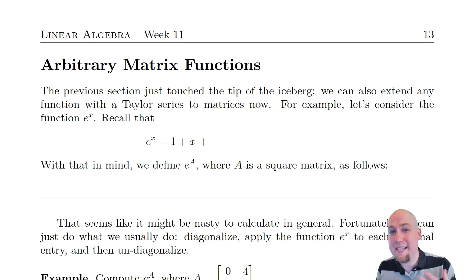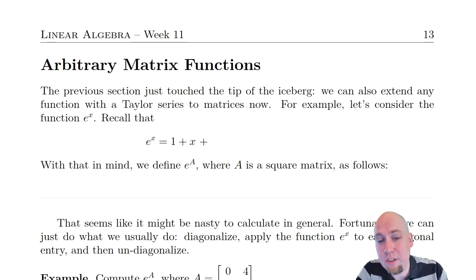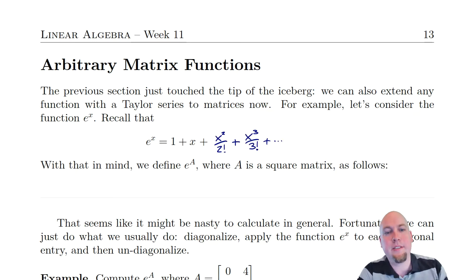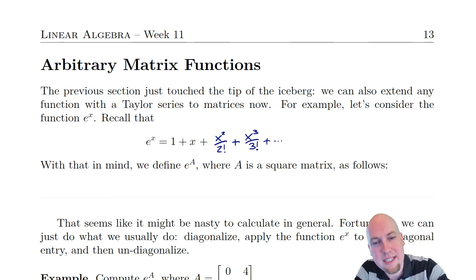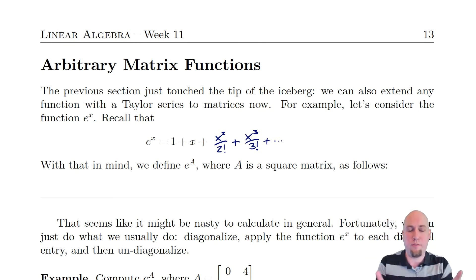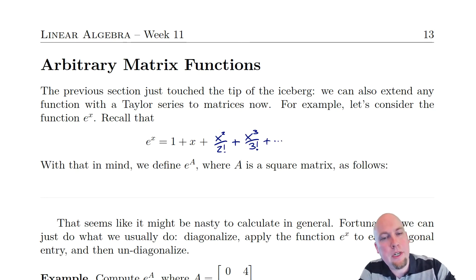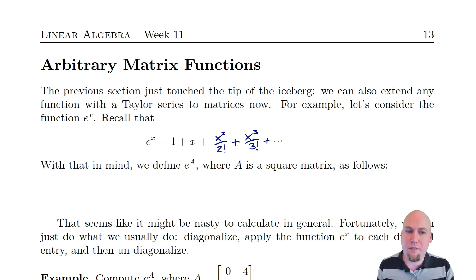To give a bit of background on why this is a reasonable thing to do, recall from calculus that lots of different functions can be written as Taylor series, or in a special case, Maclaurin series. For example, the function e to the power x can be written as 1 plus x plus x squared over 2 factorial plus x cubed over 3 factorial plus x to the power 4 over 4 factorial, and so on — it's sort of like an infinite polynomial. The important feature is that each term in this sum is just a power, and powers generalize very well to matrices.